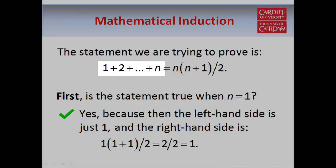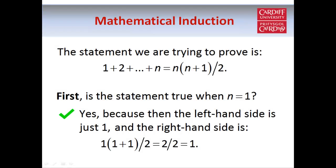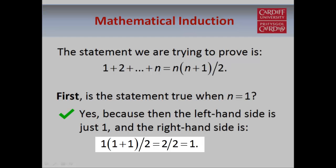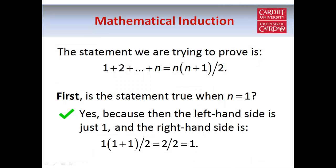the left-hand side of this equation is just 1, because we're looking at the sum of the first 1 natural numbers, and on the right-hand side we have 1 times 1 plus 1 over 2, which is equal to 2 over 2, which is also equal to 1. So the statement is true when n equals 1.